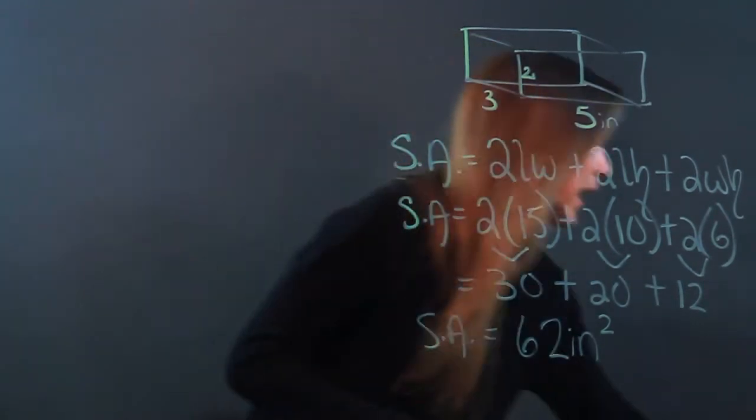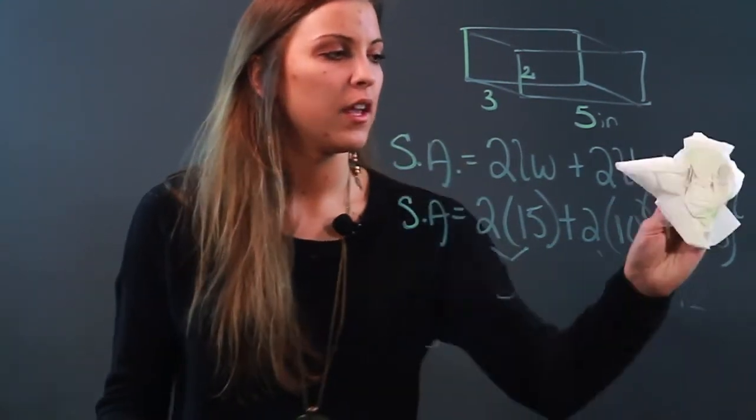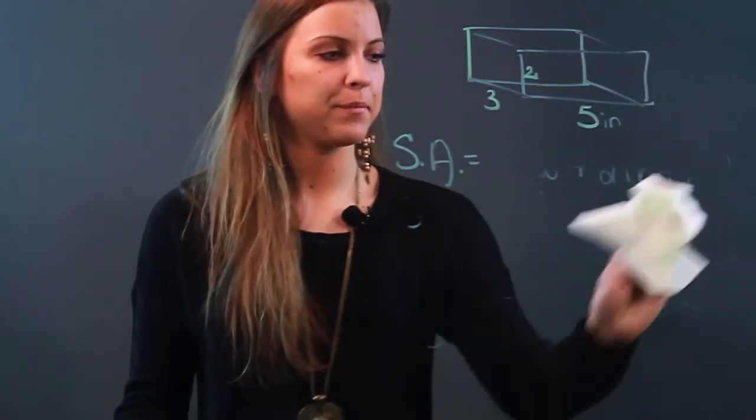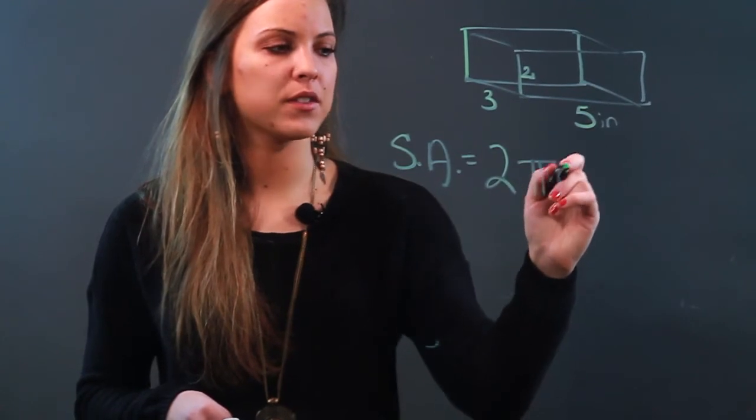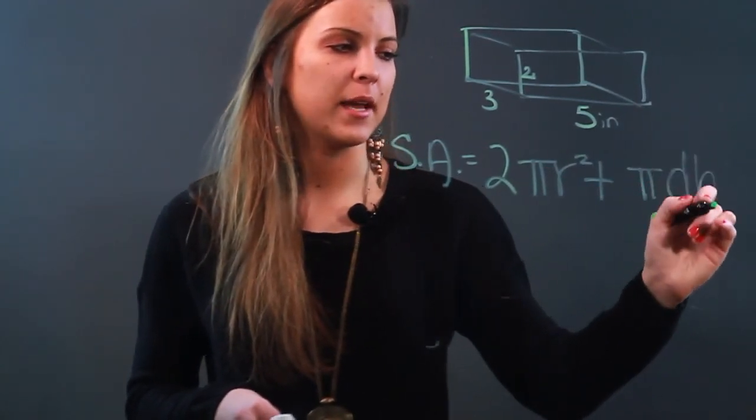So that's for a rectangular prism. Now if you wanted to do a cylinder, the formula is 2πr² plus π times diameter times height.